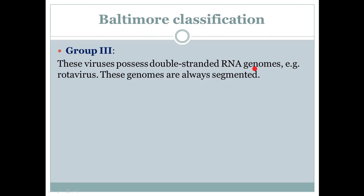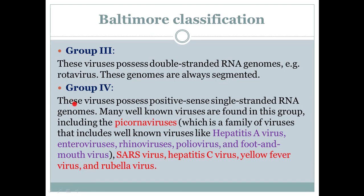Group 3 viruses possess a double-stranded RNA genome. For example, rotavirus falls in this group. An important note is that these genomes are always segmented — the genomes of Group 3 viruses are always found in segmented form.